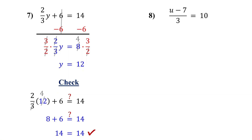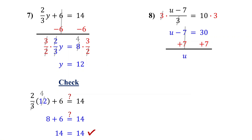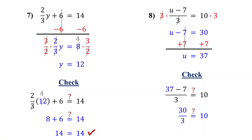Let's make sure it checks out: plug in 12 for y in the original equation. 12 and 3 reduce to 4, and 2 times 4 is 8, and 8 plus 6 is 14 — that matches the right side, so we are correct. Here's one last example. This time, the entire expression with the variable is being divided. First, isolate u minus 7 — since it is being divided by 3, we do the opposite and multiply by 3 on both sides. On the left, the 3s cancel out, leaving u minus 7. On the right, 10 times 3 is 30. Now isolate u by adding 7 to both sides. On the left, negative 7 plus 7 cancel out, leaving u by itself. On the right, 30 plus 7 is 37. So the solution is u equals 37. Let's check: 37 minus 7 is 30, and 30 divided by 3 is 10 — that matches the right side.